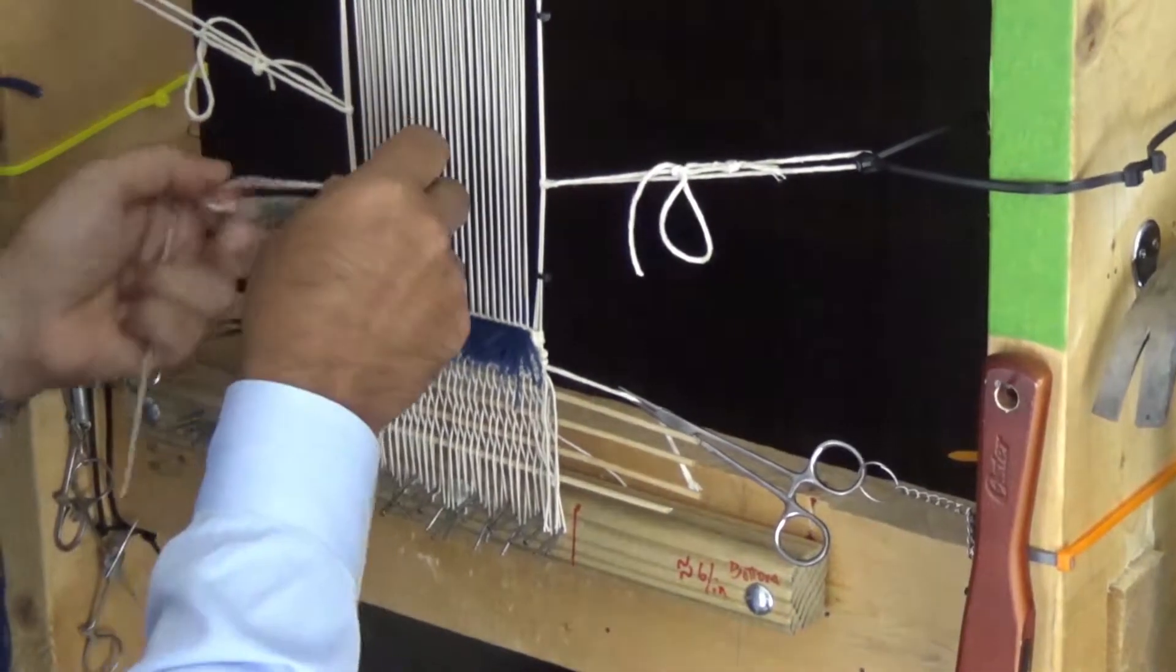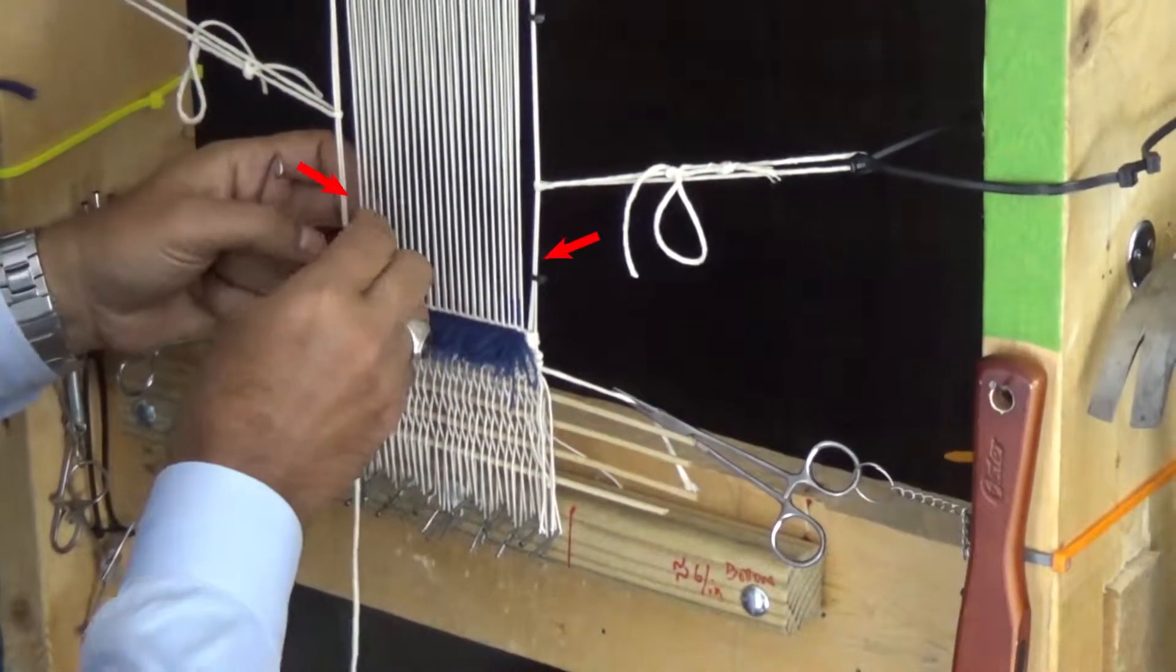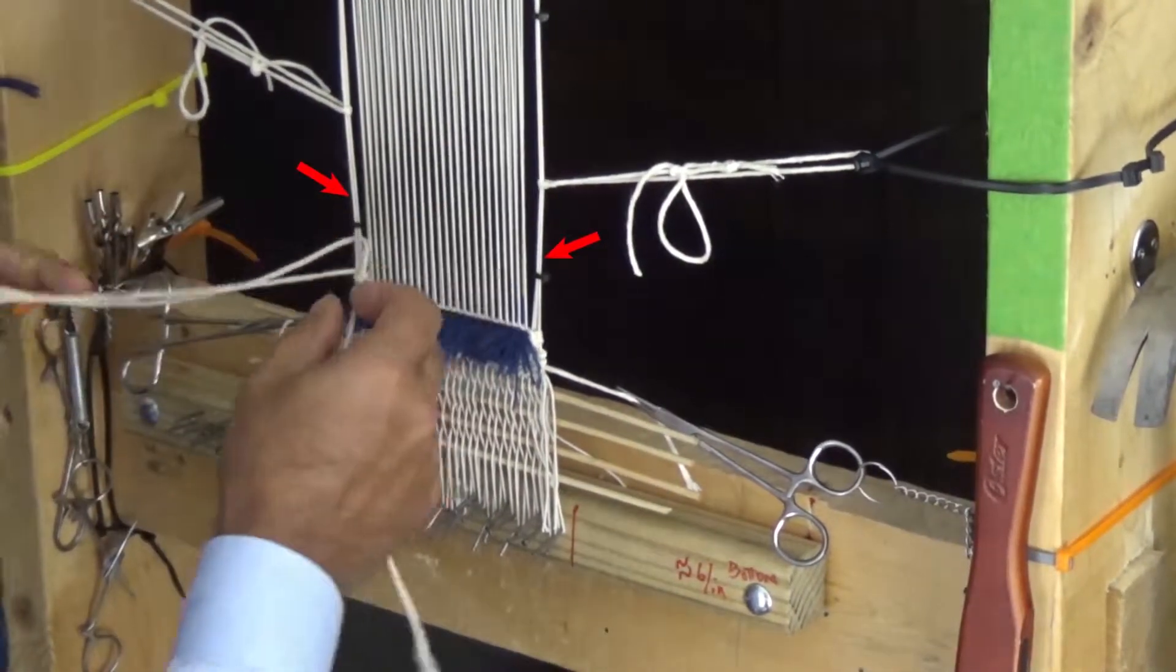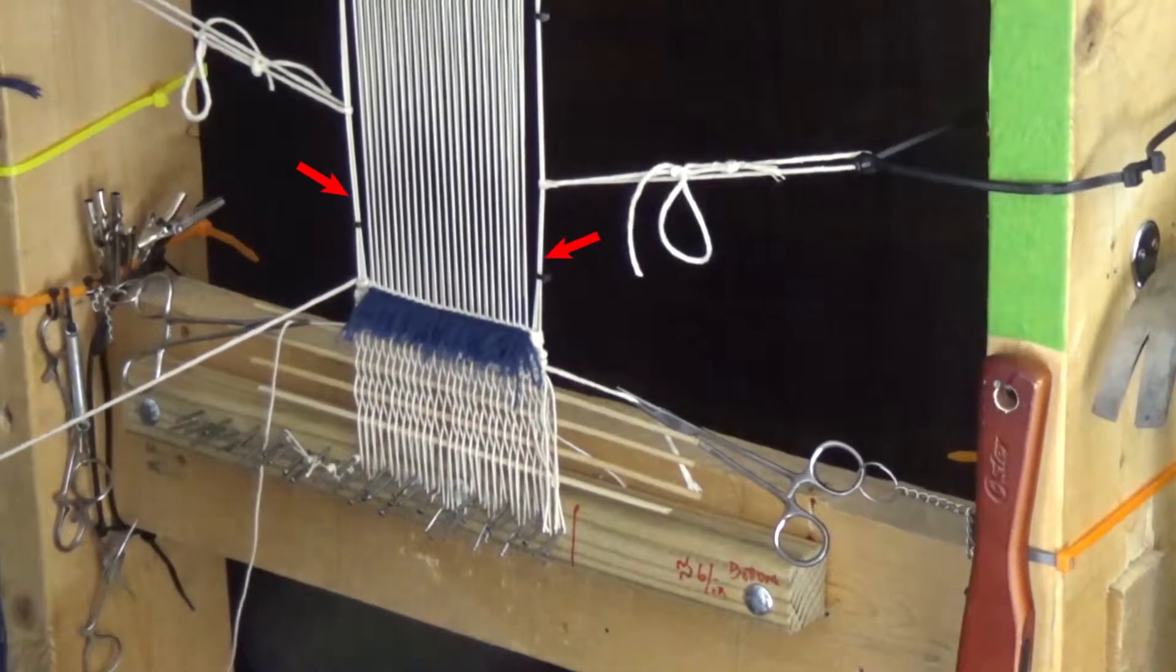The edges of rugs are called salvages, where the wefts are wrapped before we begin the next row of knots. Later we will add an overcast, which helps with aesthetics and protects the rug from wear on the edges.